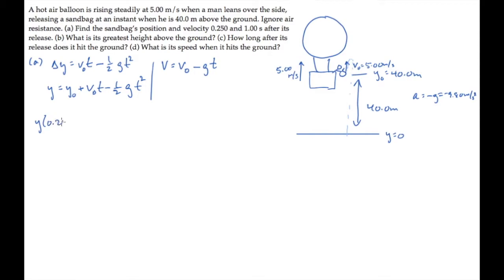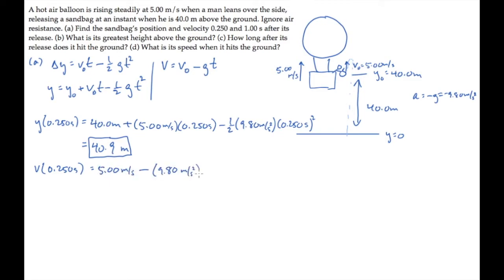The position at a quarter of a second is shown here. When you substitute all of these numbers and calculate, you find that height is 40.9 meters above the ground. The velocity at that same time is calculated here. It's the initial velocity minus g multiplied by the time. That gives you 2.55 meters per second. It's going up because the velocity is positive.